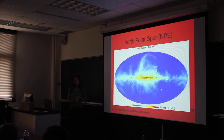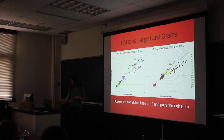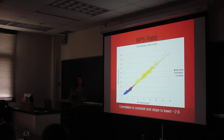One such structure is a supernova remnant, where the PAHs — the small dust grains — might be destroyed. This is the North Polar Spur, which is thought to possibly be a supernova remnant. It's so large that we had to take three different regions to analyze at different latitudes. What we found was that the correlation, also linear, is closer to 2.6, meaning the PAH abundances are lower relative to the large grains.